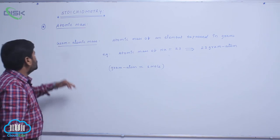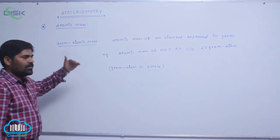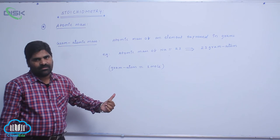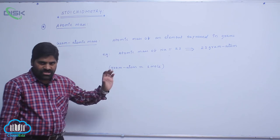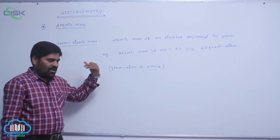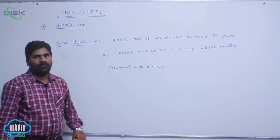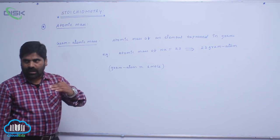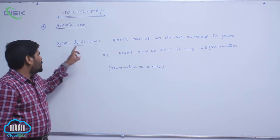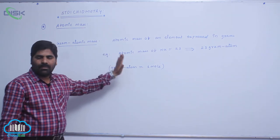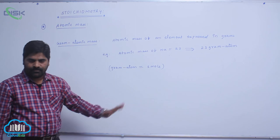So, this covers the first topic: atomic mass, average atomic mass, 1 amu, how to calculate amu, and the next one is gram atomic mass.